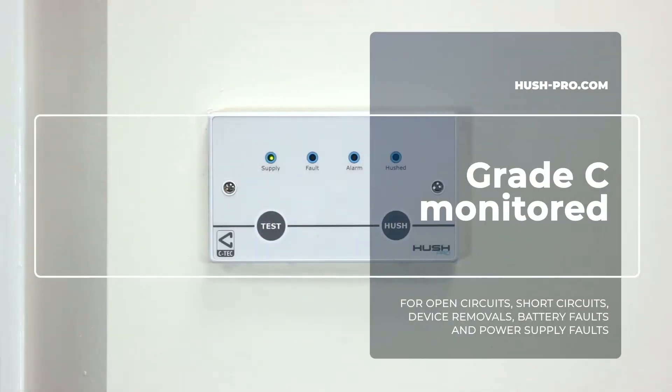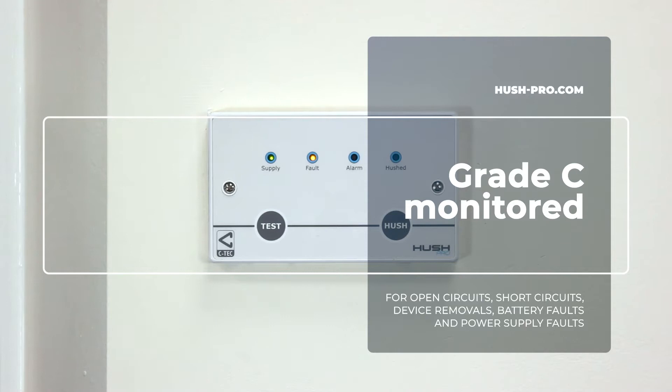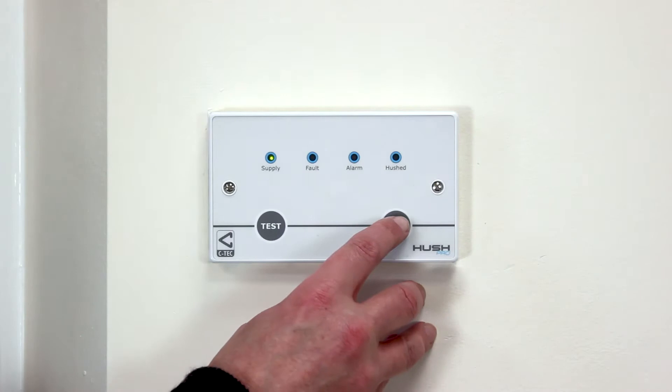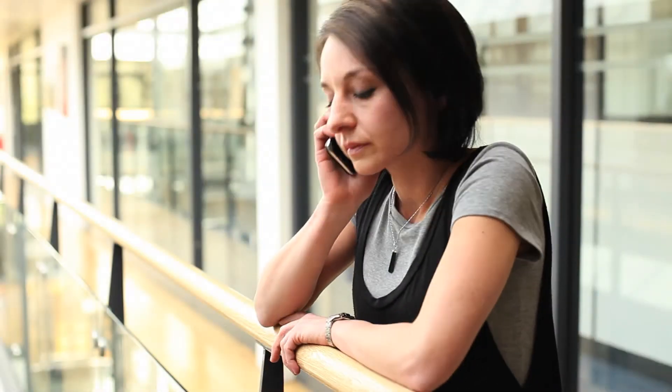Such a fault is brought to the attention of the occupant by a buzzer sounding. The occupant can then come along and press Hush to silence the fault for 24 hours. The idea being they contact their landlord and ask them to fix the fault.